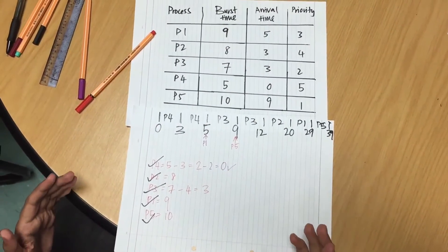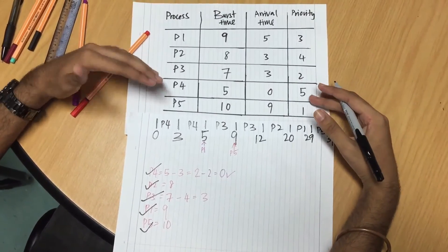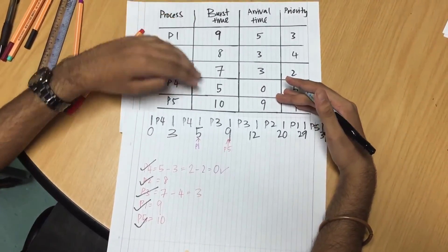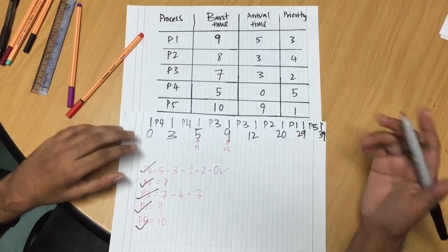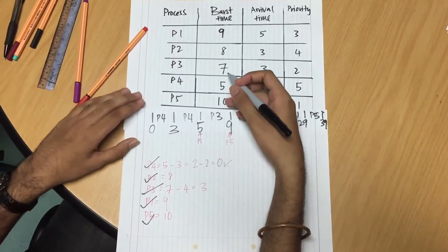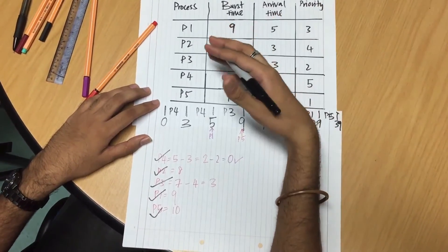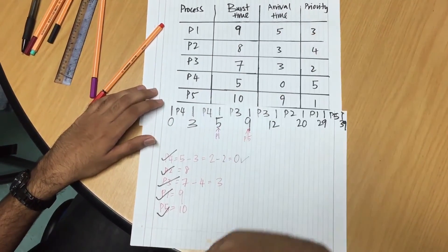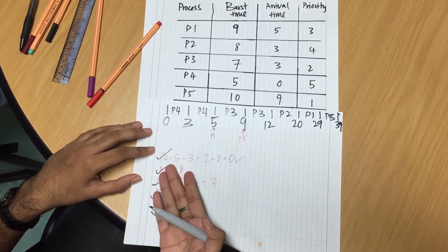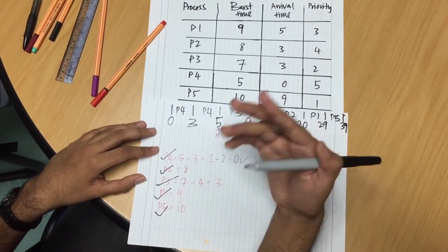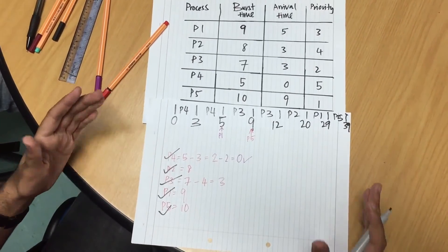Let me recap what I said. First, choose the process by the shortest arrival time — in this question, P4 arrives first at 0 milliseconds. Check its burst time, which is 5 milliseconds. In between the 5 milliseconds, P2 and P3 arrive at 3 milliseconds, causing an interrupt for P4. Minus the elapsed seconds to find the new burst time, compare the burst times of the arrivals, choose the shortest, and complete the preemptive SJF. Hope you guys understand.